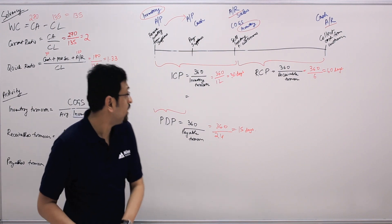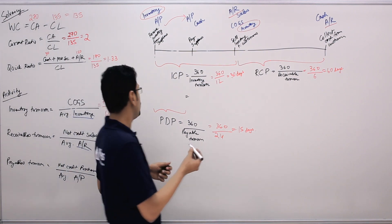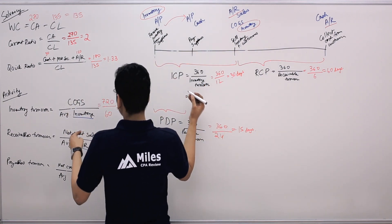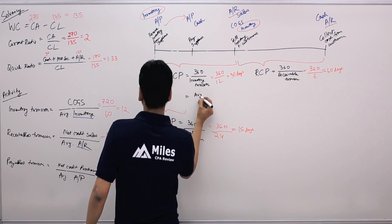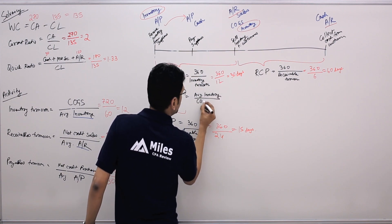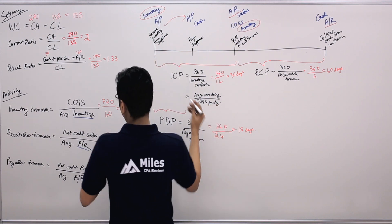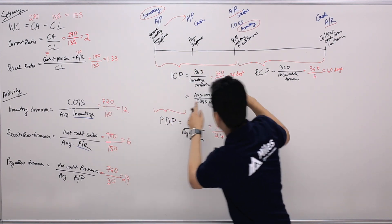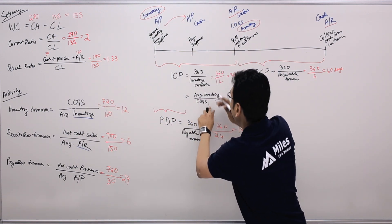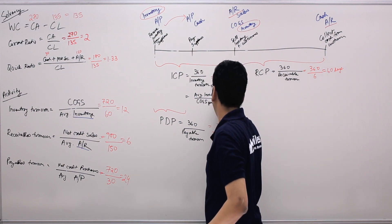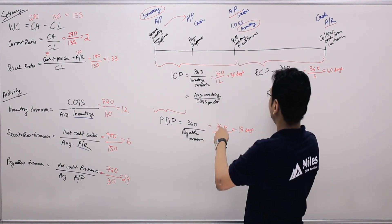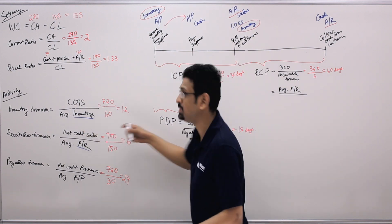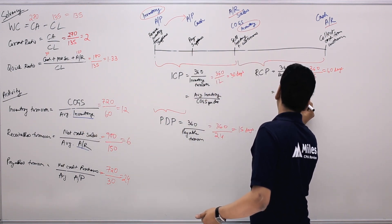Another way to calculate these periods: ICP equals average inventory divided by COGS per day. This is just the inverse of the turnover ratio — average inventory becomes the numerator and COGS per day (COGS divided by 360) is the denominator. For RCP: average accounts receivable divided by net credit sales per day.